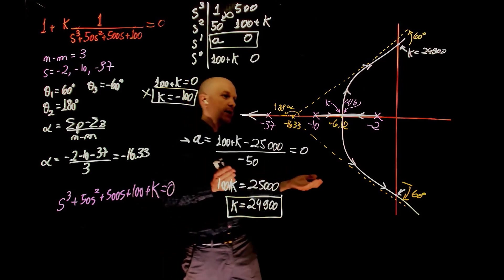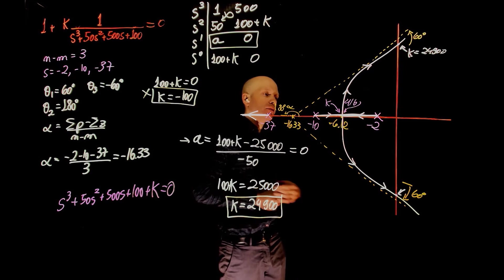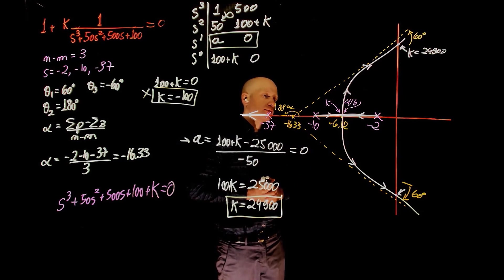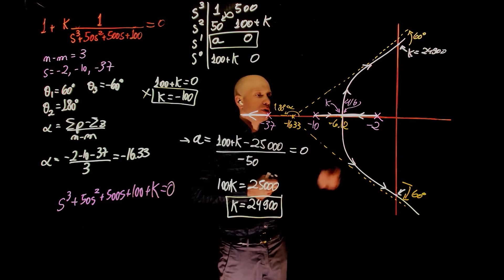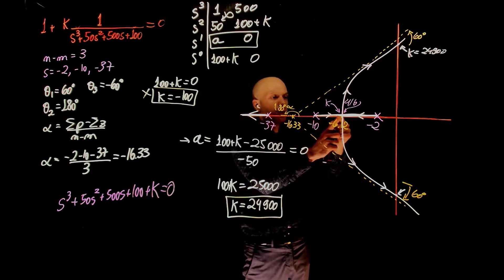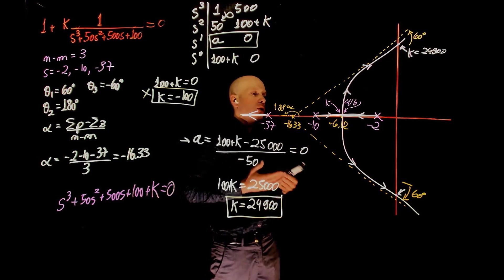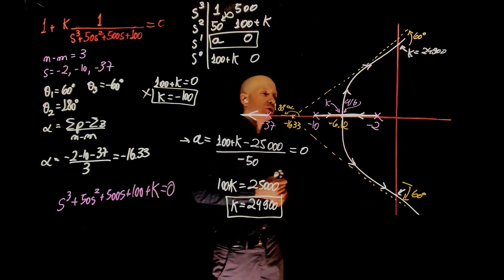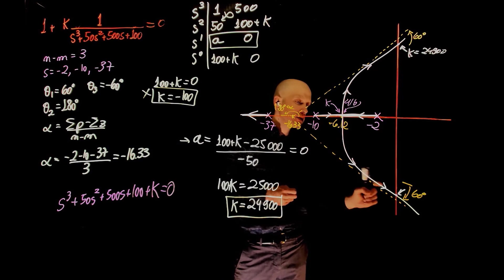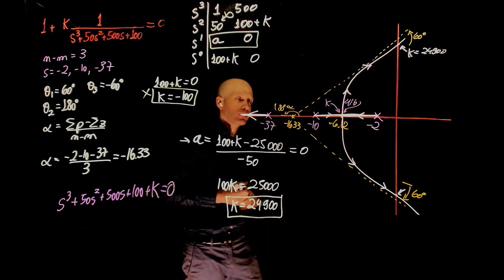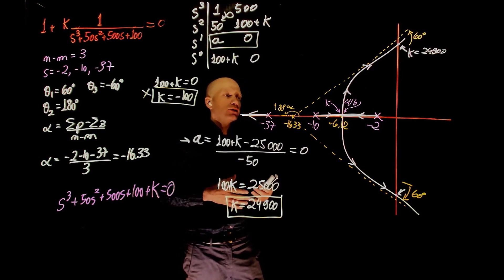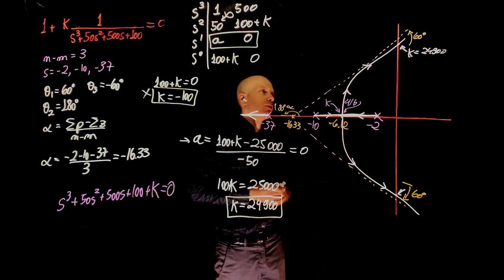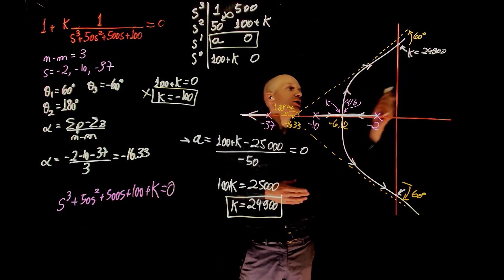To summarize now, if k is between 0 and 416, the poles are real numbers. This is also a real number. And we have an overdamped system. When k equals to 416, we are placed right there at the breakaway point. Because the two poles are the same, the system is said to be critically damped. When k is greater than 416 but is smaller than 24,900, then the poles are now located along these lines that will now have complex conjugate poles. And the system is said to be underdamped. When k equals to 24,900, the system is marginally stable. And when k is greater than 24,900, the system is unstable.